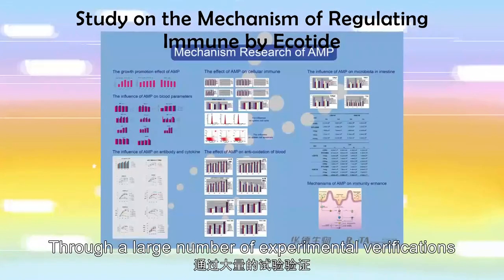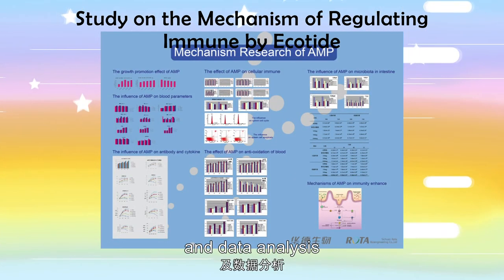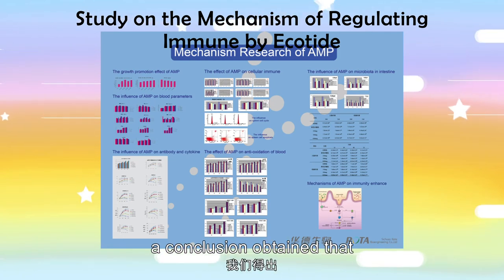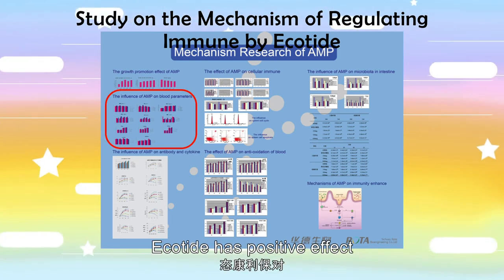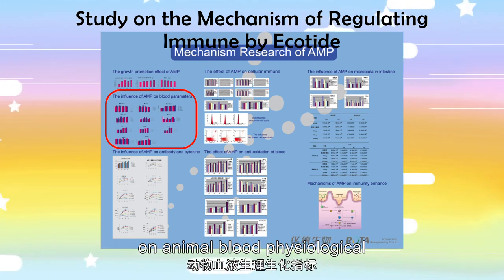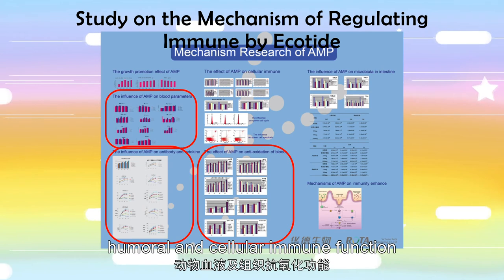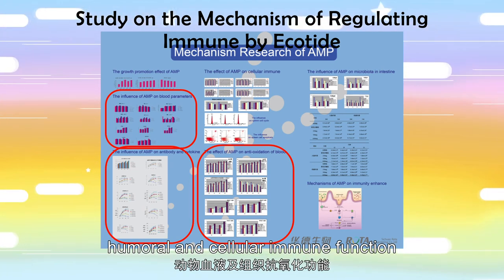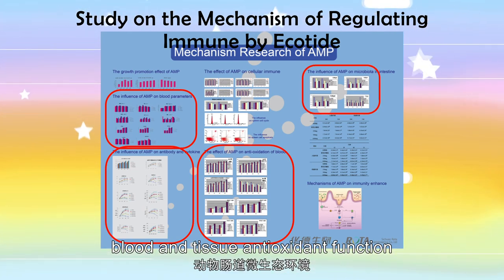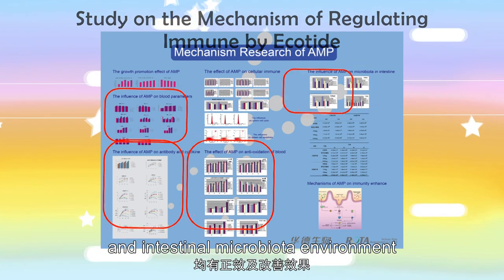Through a large number of experimental verifications and data analyses, it was concluded that Equotide has a positive effect on animal blood physiological and biochemical indexes, humoral and cellular immune function, blood and tissue antioxidant function, and the intestinal microbiota environment.